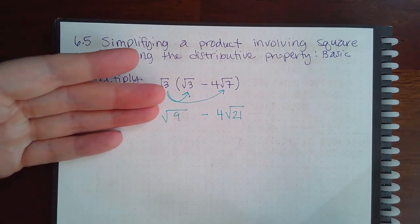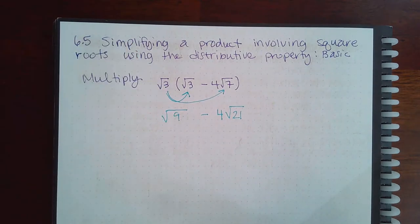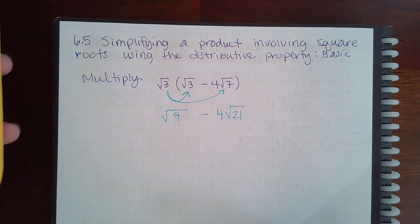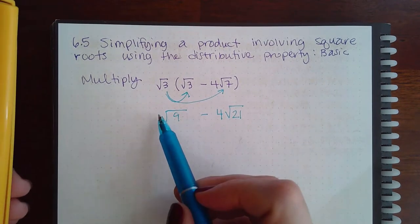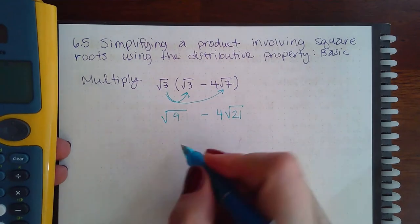Which involves dividing the exponents by the indices. Indices meaning index plural. Okay, so for the square root of 9, I know that that's 3.